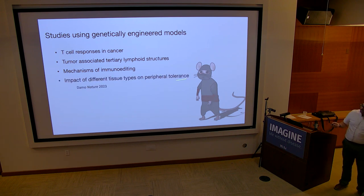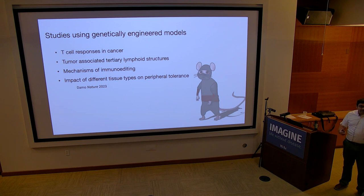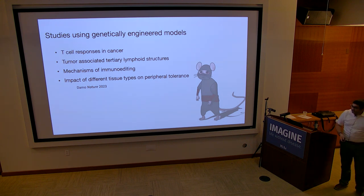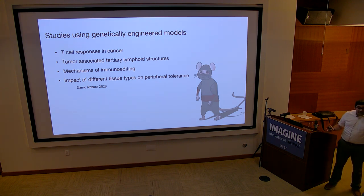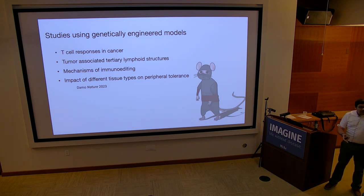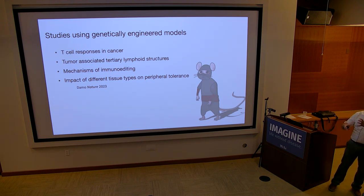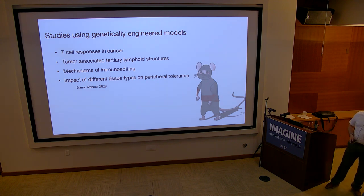We're also interested in the impact of different tissue types on peripheral tolerance. We recently had a paper showing that if you turn on antigen in the skin, T cells get activated and look like effector cells, but get trapped in the dermis and don't really cause pathology. Turn on antigen in the liver, you get anergic cells within a few days that won't respond to LCMV infection. Turn it on in the colon, T cells rapidly attack colonic cells. Turn it on in the pancreas, T cells enter the pancreas but can't attack the beta cells. Every tissue has a slightly different mechanism for maintaining peripheral tolerance.